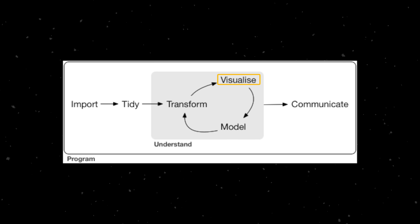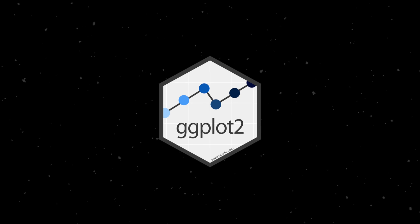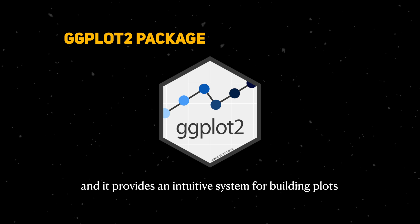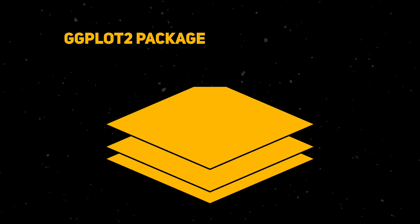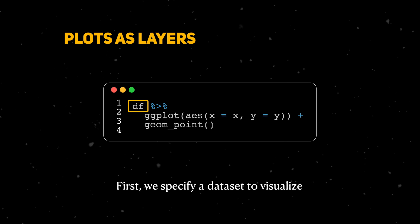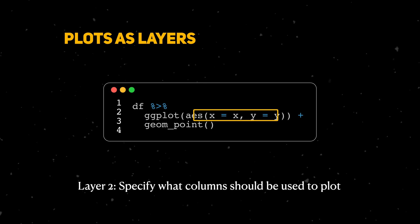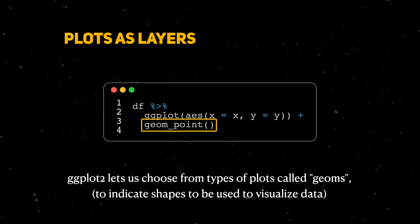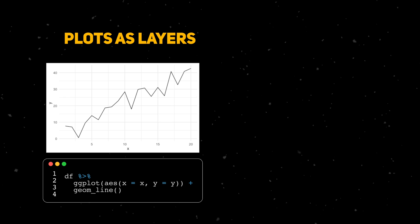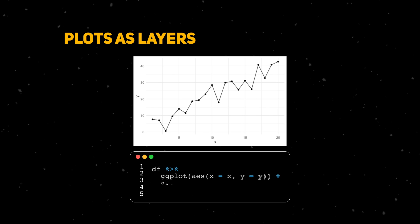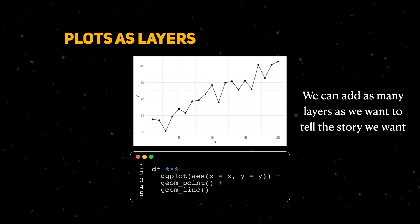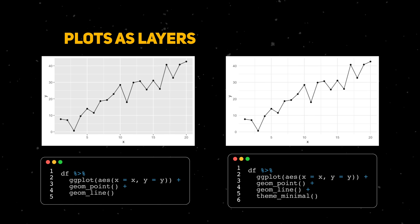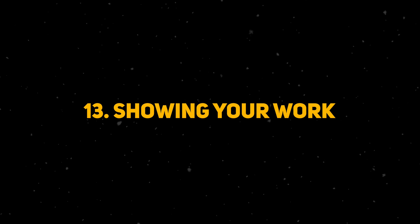Once we've cleaned the data, we can start learning from it — and one of the fastest ways is through visualizations. This brings us to ggplot2. The 'gg' stands for Grammar of Graphics, and it provides an intuitive system for building beautiful and easy-to-make plots. The idea is that we build plots in layers: first we describe the data we want to visualize and start a plot with the ggplot function, then we specify what data to use on one or both axes, then we choose what kinds of plots to make. ggplot calls these geoms — for line plots there's geom_line, for scatter plots there's geom_point, and many more. Thanks to the layering philosophy we can add as many layers as we want. ggplot also has many built-in themes so getting a refined look is just another layer to add.